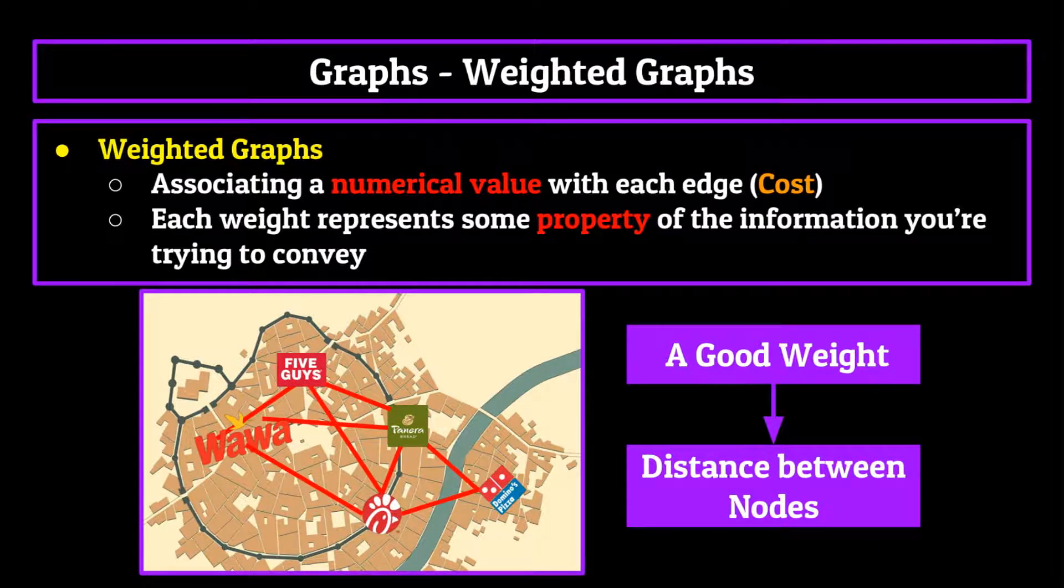This comes in handy a lot, especially with navigation, such as the case with our food example, as we of course always want to find the path of least cost or weight between the different nodes. So there are the major properties of a graph that the different nodes and edges can have.